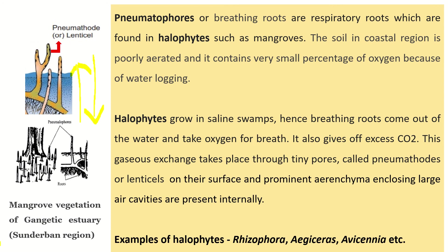This mangrove vegetation is found in the Gangetic Estuary, in the famous Sundarban regions of West Bengal in India. Please also learn these names: Rhizophora, Aegisera, and Sevisinia are some of the most common halophytes found in India and in various parts of the world.